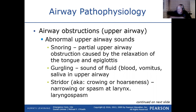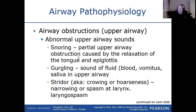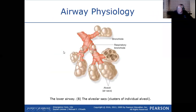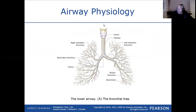Gurgling is the sound of fluid in the upper airway — blood, vomit, or water — and we have suction to remove it. Stridor is a sound caused by the larynx, the top of the trachea. The epiglottis is supposed to prevent anything but air from entering, but if you're talking and swallowing simultaneously — say at a meal with alcohol — it's possible to trick the safety mechanisms and get something into the airway.